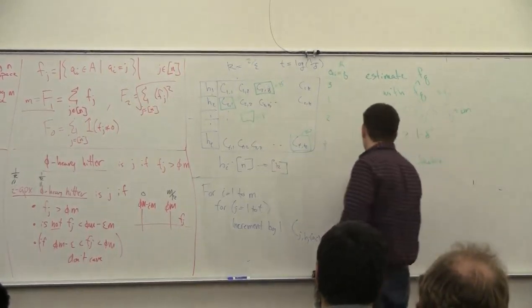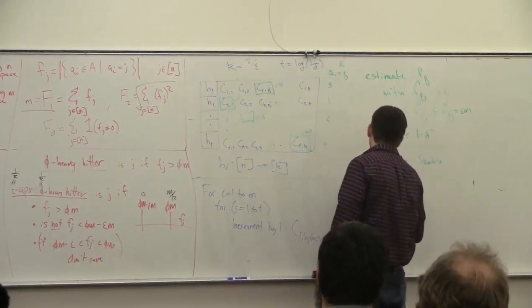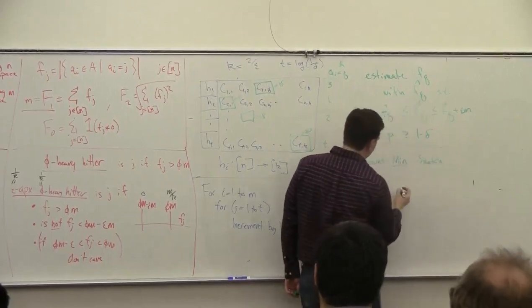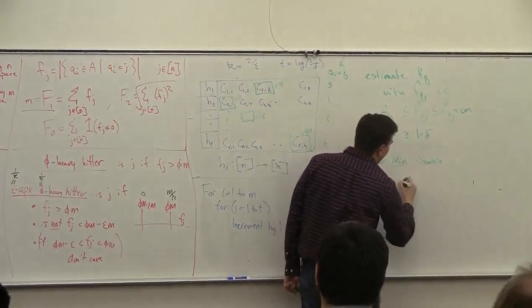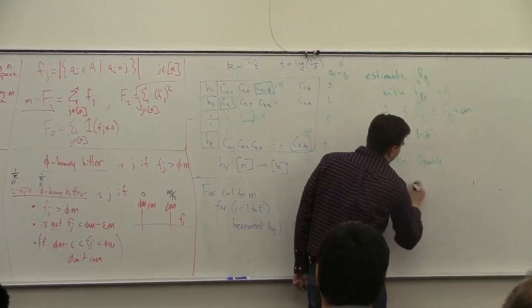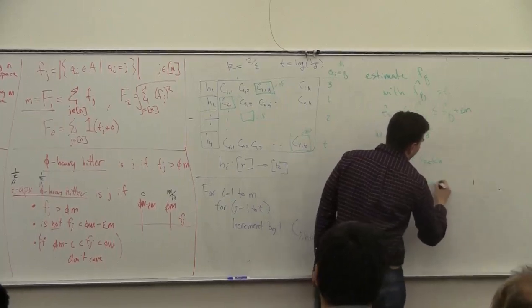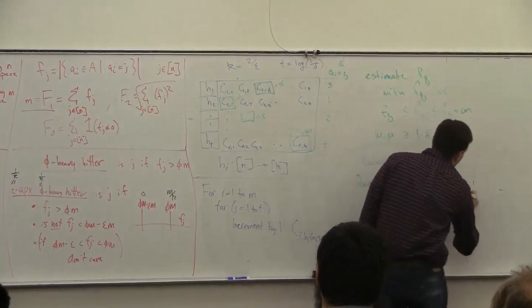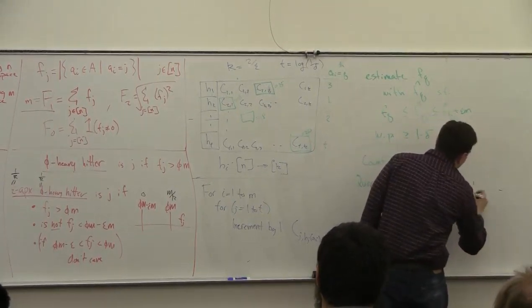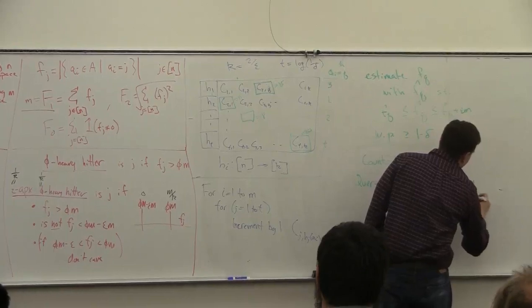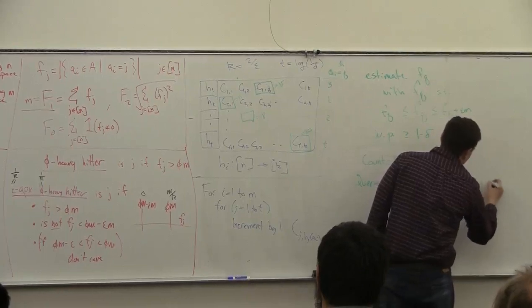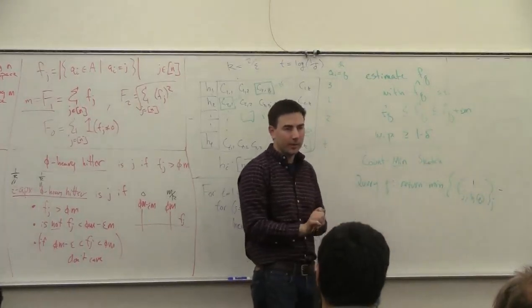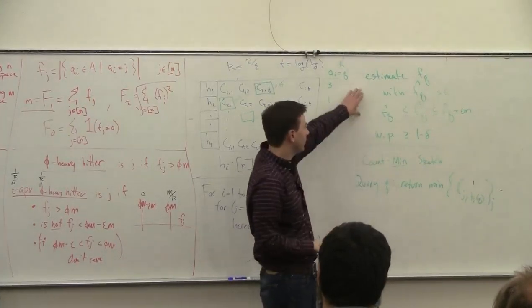So on the query of q, you return the min of the c_j of h_j of q. Right, so you just look at all the counters and take the minimum of them, and it will give you this property.